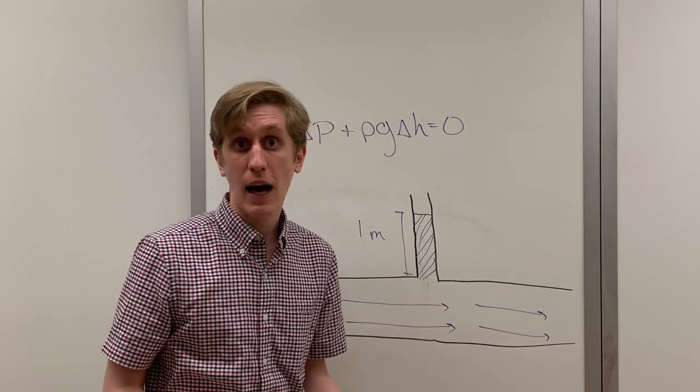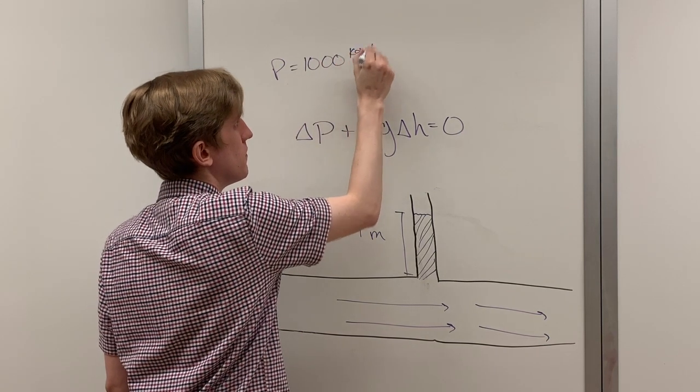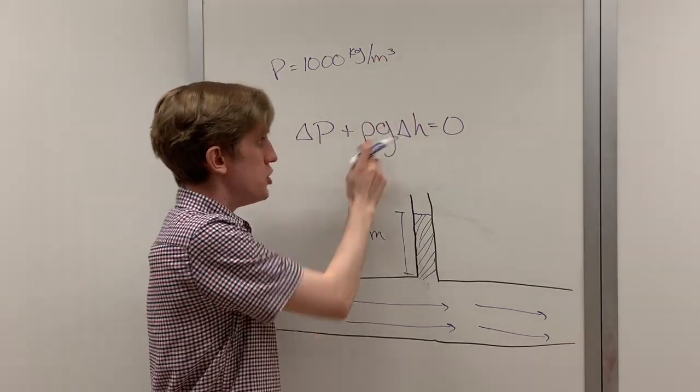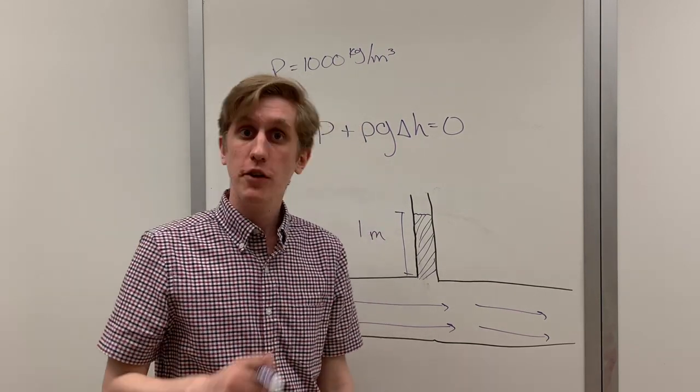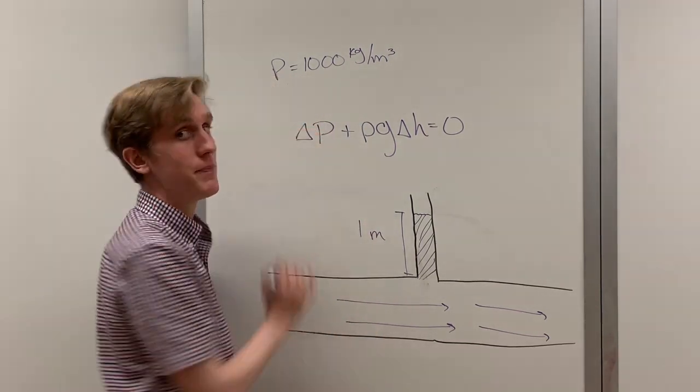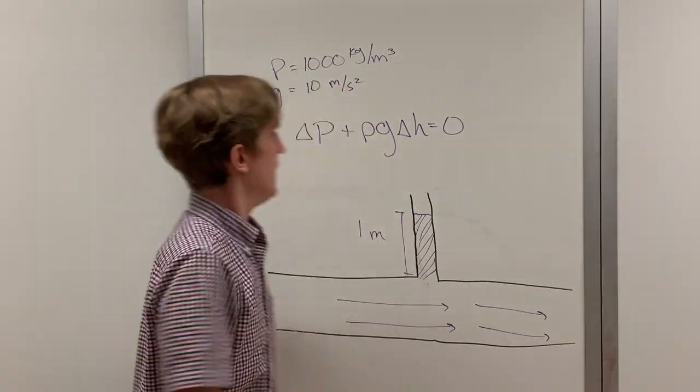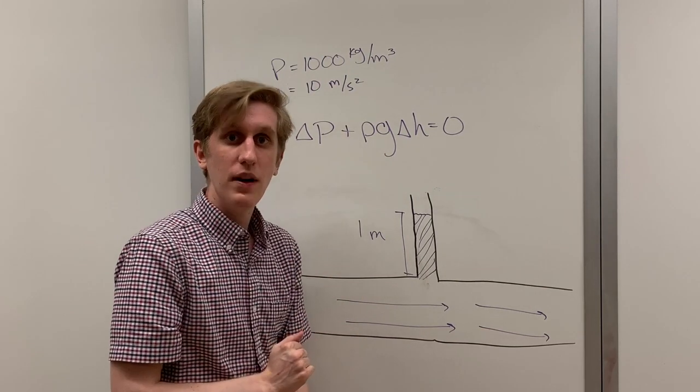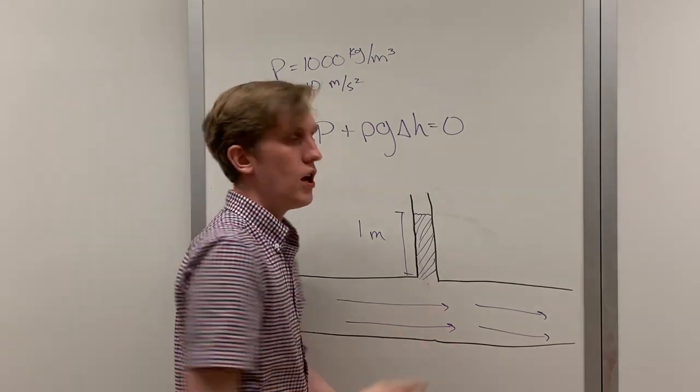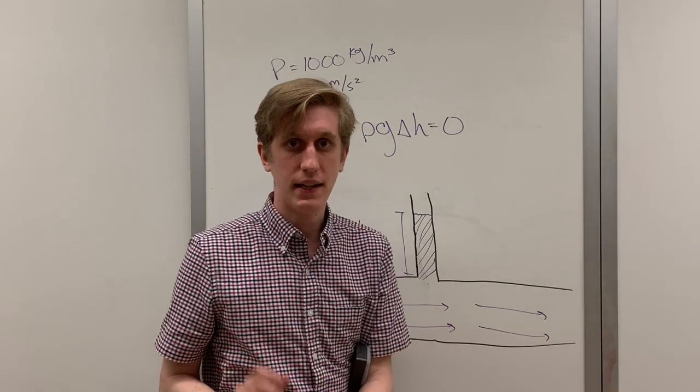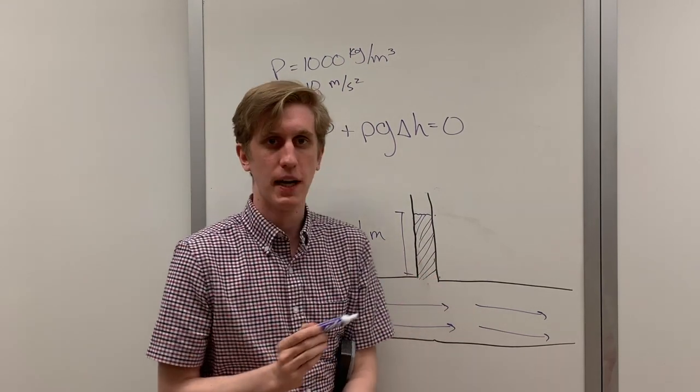G represents the acceleration of gravity near the Earth's surface. For the purposes of this class, we will take that to be 10 meters per second squared. Now let's write this all out and determine what the pressure is at the bottom of the stand pipe. The two points that we are considering in this example are here, the top of the stand pipe, and here, the bottom of the stand pipe.